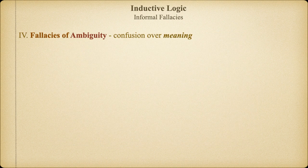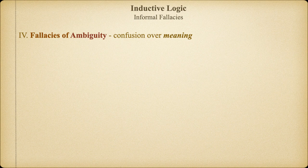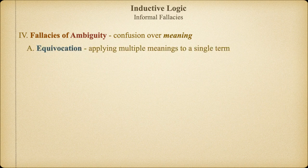Having looked at some examples of how assumption can cause induction to go astray, let's conclude by looking at how ambiguity can undermine what would otherwise be good inductive reasoning. The most common way this can happen is by applying two different definitions to the same term in the context of a single argument. In propositional logic, it was essential to use one and only one variable to represent a unique statement — otherwise, the same variable might refer to two different statements, each with distinct logically possible truth values, undermining the validity of our deduction. A similar problem arises in induction if we fail to be clear about the meaning of a central term in an argument, causing us to think we're talking about one thing when we're really talking about two different things.